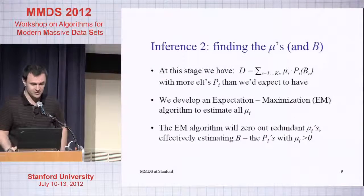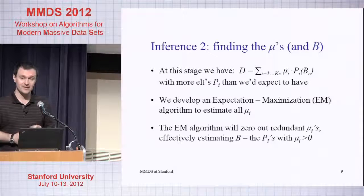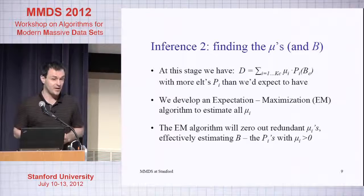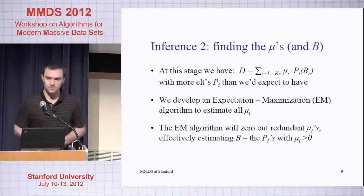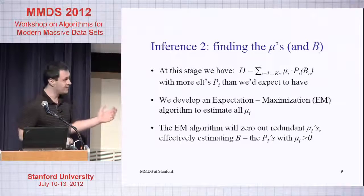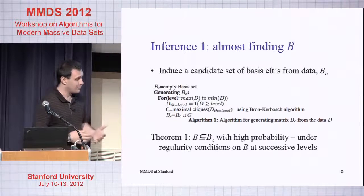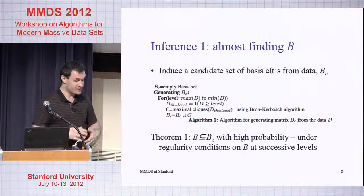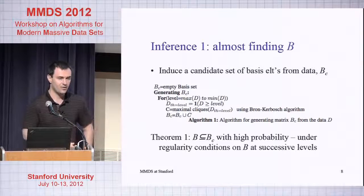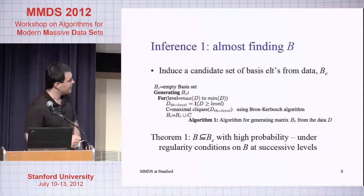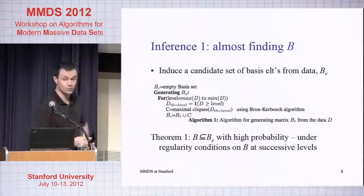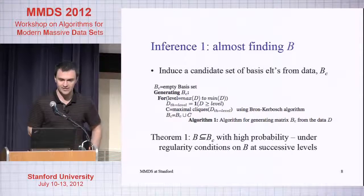Then the second stage you just do maximum likelihood. The nice trick was that I started with an n by n adjacency matrix, and since this matrix B' has the number of columns in the same order of magnitude as the true number of columns, I basically reduce my dimensionality from n squared to 2k in practice.